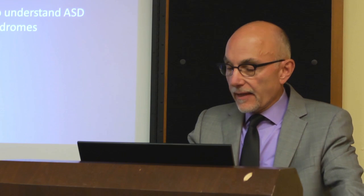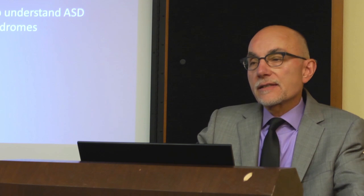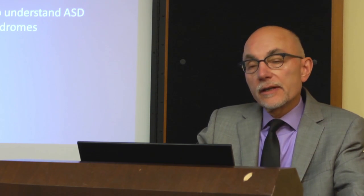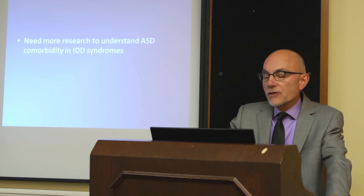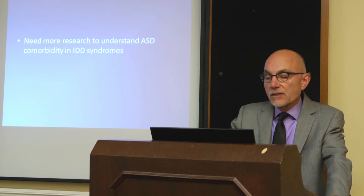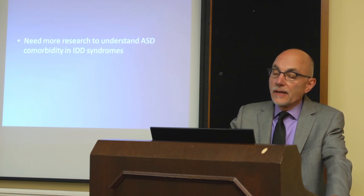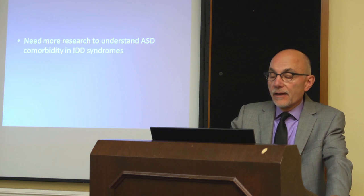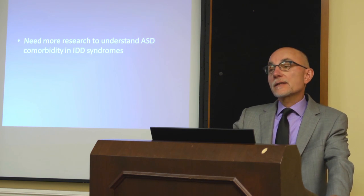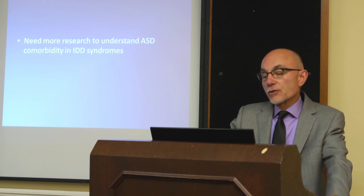The bottom line is that as a field we've been too complacent, stopping with prevalence estimates — knowing the comorbidity rates between autism and fragile X, or autism and Down syndrome. That's really just the starting point. We need much more research focused on understanding what that comorbidity actually means. It may mean very different things across different conditions, with different implications for what we learn about autism, what we learn about IDD, and importantly, what that means for treatment.